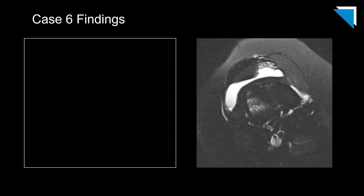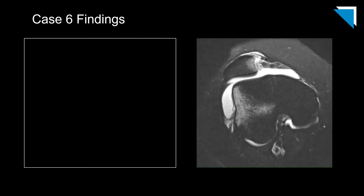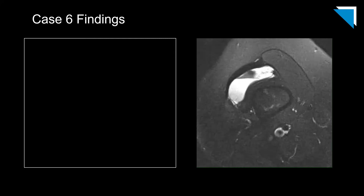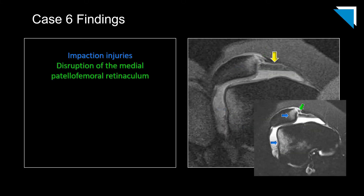These are axial fat-suppressed fluid-sensitive sequences from an MRI of the knee. This single image demonstrates all the pertinent findings: impaction injuries with associated bone marrow edema along the medial patellar facet and the lateral aspect of the lateral femoral condyle, and at least a partial-thickness tear at the patellar attachment of the medial patellofemoral retinaculum.